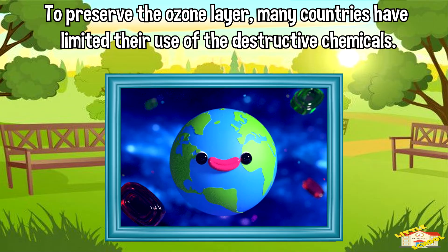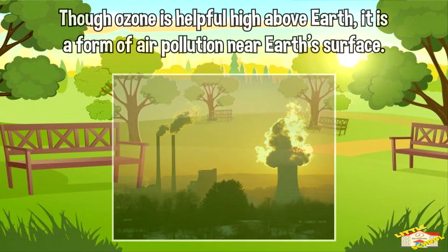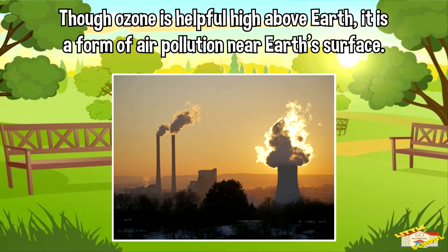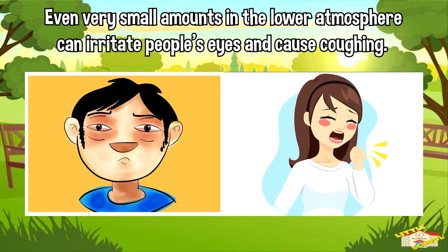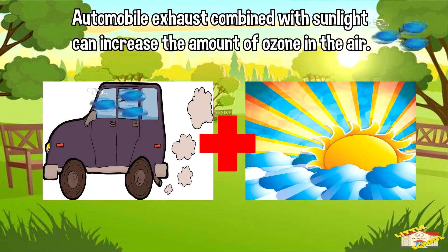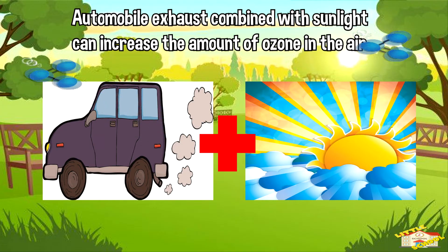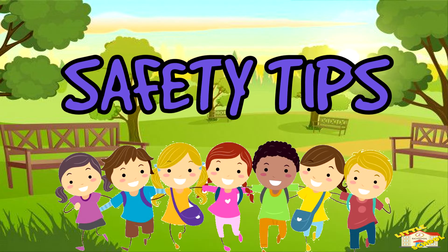Though ozone is helpful high above Earth, it is a form of air pollution near Earth's surface. Even very small amounts in the lower atmosphere can irritate people's eyes and cause coughing. Automobile exhaust combined with sunlight can increase the amount of ozone in the air.